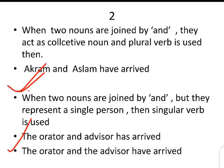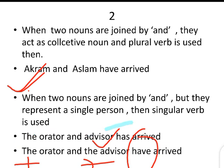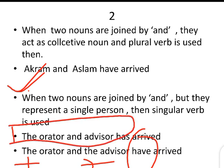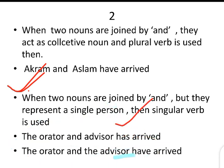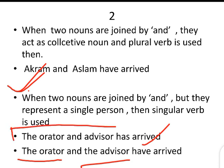'The orator and advisor has arrived.' This is showing one entity — the same person is both orator and advisor — so 'has' (singular) is used. But if 'the' is added before both, 'the orator and the advisor have arrived', then there are two separate entities — one orator and one separate advisor — so plural 'have' is used. When two nouns show one entity, singular verb; when two separate entities, plural verb.